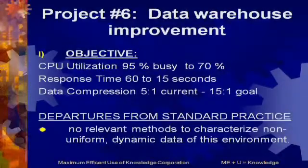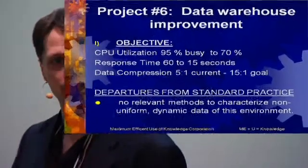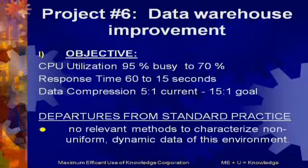The CRA uses an example of a data warehouse development project. The departure from standard practice: they have an existing data warehouse management system and want to improve it to be faster. They did studies on the internet, looked at competitive products, and could find no relevant methods to characterize non-uniform dynamic data. Most methods deal with static or more uniform data, but they have disparate, dynamically changing data. Their objective is to improve performance: CPU utilization is at 95% busy, and they hope to get it down to 70%.